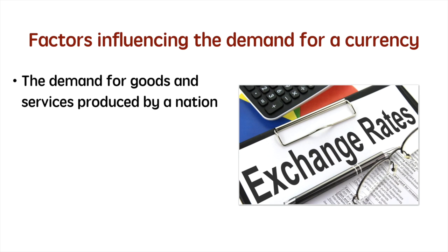The demand for currency is derived partially from the demand for a country's goods and services. If there is an increase in the attractiveness of American goods to British consumers, then the demand for the dollar will increase. This could be due to a host of factors including relative price levels, improved quality, and changes in tastes and preferences. All other things being held constant, a decrease in the US rate of inflation will make American products more price competitive and should drive up their demand. This could in turn drive up the demand for dollars, causing an appreciation of the dollar. This can also work the other way, with a rise in the price level of the US reducing the demand for goods and services by British buyers and thus causing the dollar to depreciate.